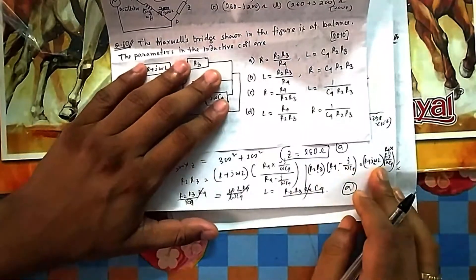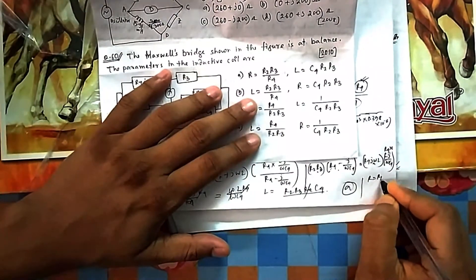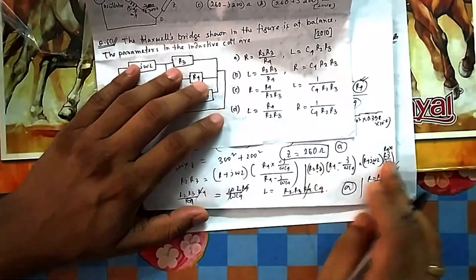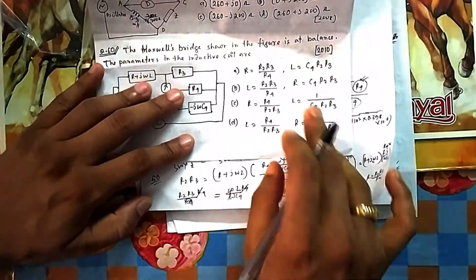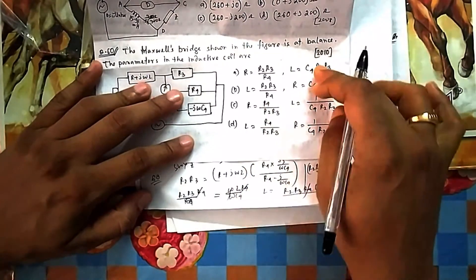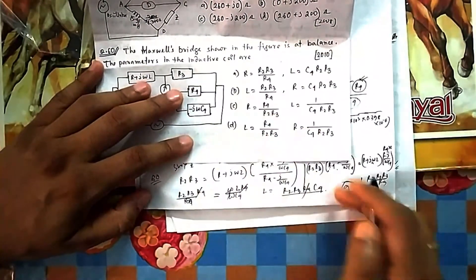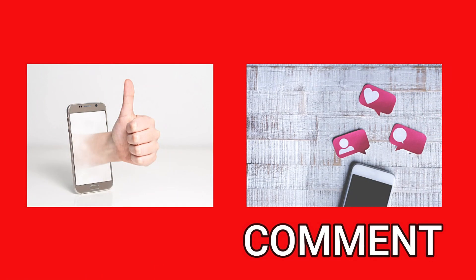Since only one option has L in the correct form, there is no need to calculate the imaginary part to find R — you can directly select the option. If you liked the video, press the like button and leave your valuable comments in the comment section.